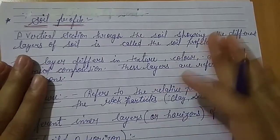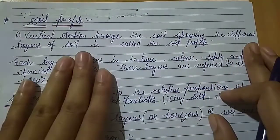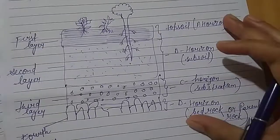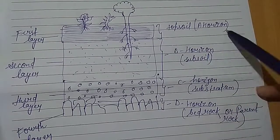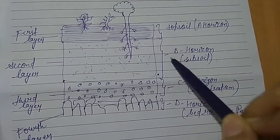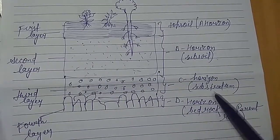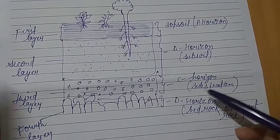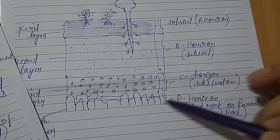Next is soil profile. A vertical section through the soil showing the different layers of soil is called the soil profile. The different layers of soil found in the earth are: the topmost layer called topsoil or A horizon, below that is B horizon or subsoil, below that is C horizon or substratum, and below the substratum is the bedrock or parent rock.